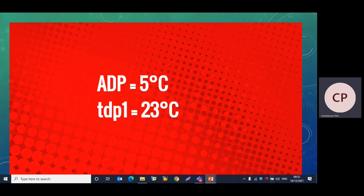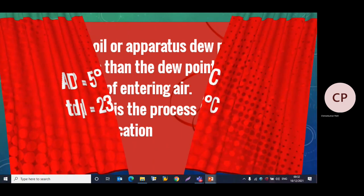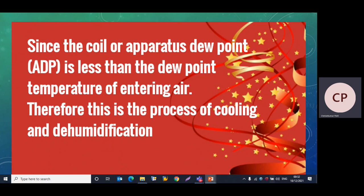The ADP is 5°C and the dew point temperature of entering air at point 1 is 23°C. Comparing these two: the coil's apparatus dew point (ADP = 5°C) is less than the dew point temperature of the entering air (23°C). Therefore, this is the process of cooling and dehumidification.